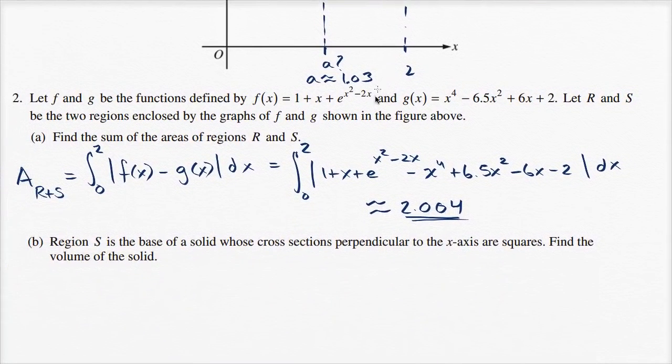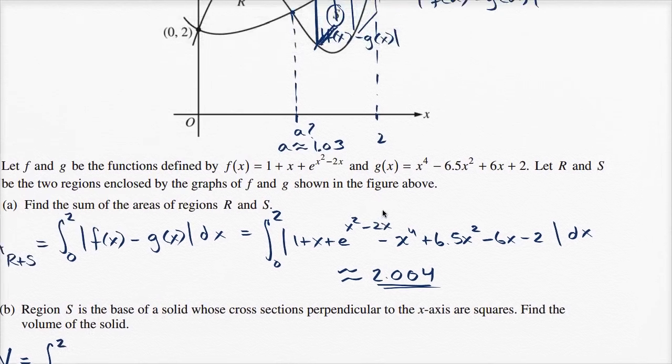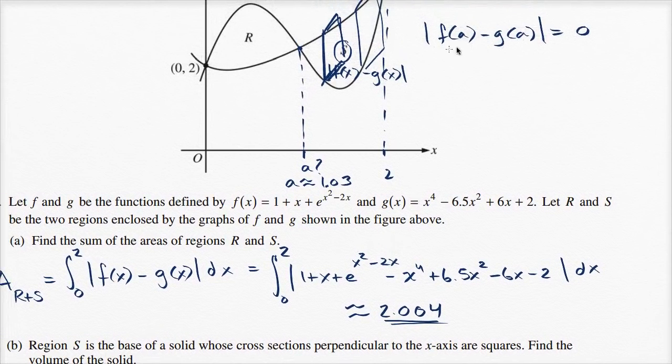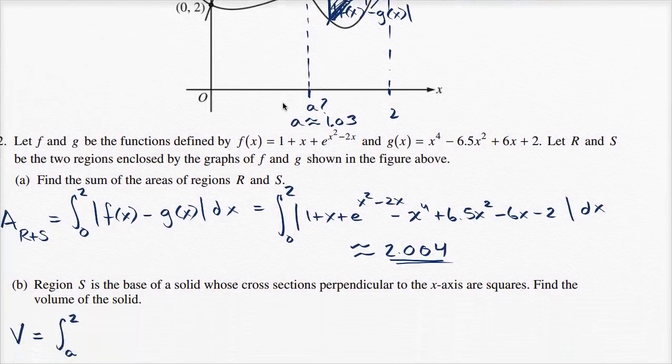and then you are going to get the volume of that figure. So the volume is going to be equal to the integral from x equals A all the way to x equals 2 of this business. This is the length of one side of the square, but we want to square it because that's going to give us the area of that cross-section.